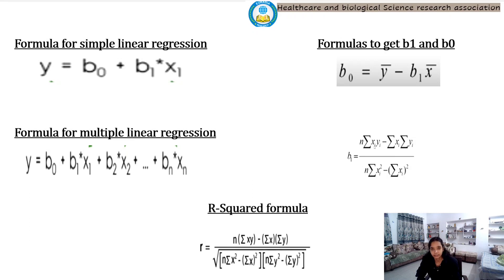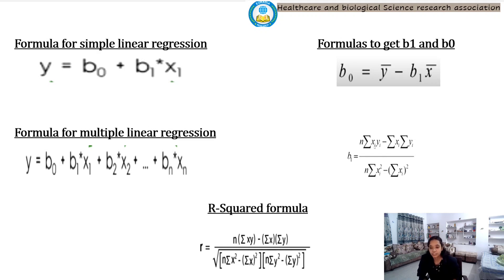Here are the formulas used to build our multiple linear regression model. The first is the formula for simple linear regression, which has one independent variable x1, one dependent variable y, intercept b0, and slope coefficient b1. For multiple linear regression, we need more than one variable — x1, x2, through xn. Here are the formulas to calculate b1 and b0, and the last is the R-squared formula by which we can calculate the model's accuracy.